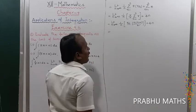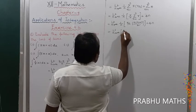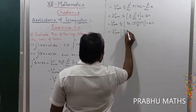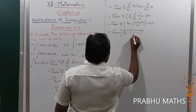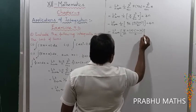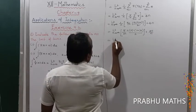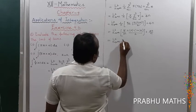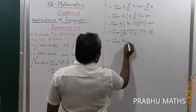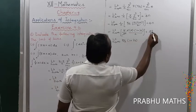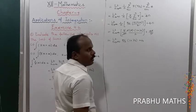Taking 1 by n inside: limit as n tends to infinity of [5 by n² times n(1 + 1/n)/2 plus 4n/n]. The n² cancels, giving limit as n tends to infinity of [5 by 2 times (1 + 1/n) plus 4].